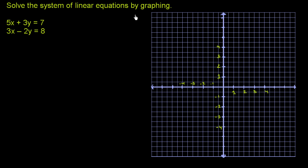When they say to do it by graphing, we're essentially going to graph the first equation. The graph is really just depicting all of the x's and y's that satisfy that first equation. Then we graph the second equation, depicting all of the x's and y's that satisfy that one. So if we're looking for an x and a y that satisfies both, that point needs to be on both graphs — it'll be the intersection of the two graphs.